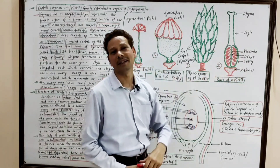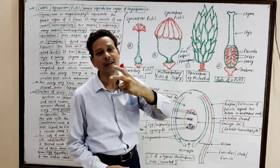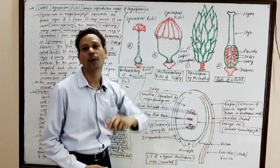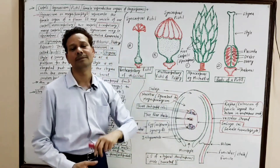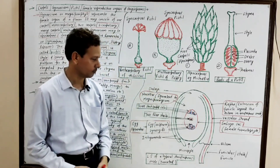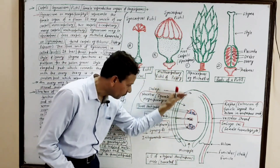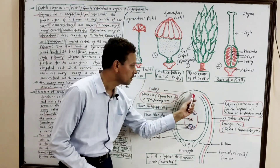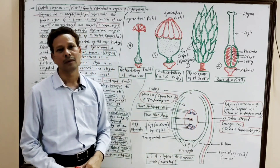In this ovule, the ovules remain attached to the ovary wall by parenchymatous cushions called placenta. This is the structure of an ovule — it is an integmented megasporangium. This ovule is generally anatropous: an anatropous ovule is inverted, in which the micropyle faces downward and the basal part, which is the chalaza, lies at the terminal part.